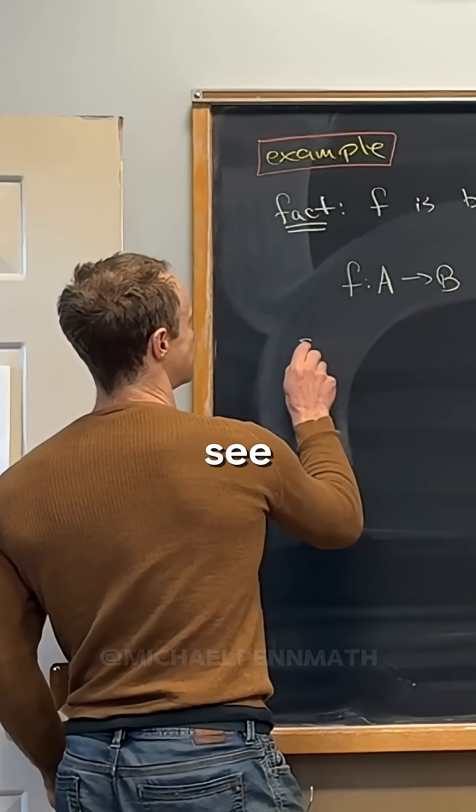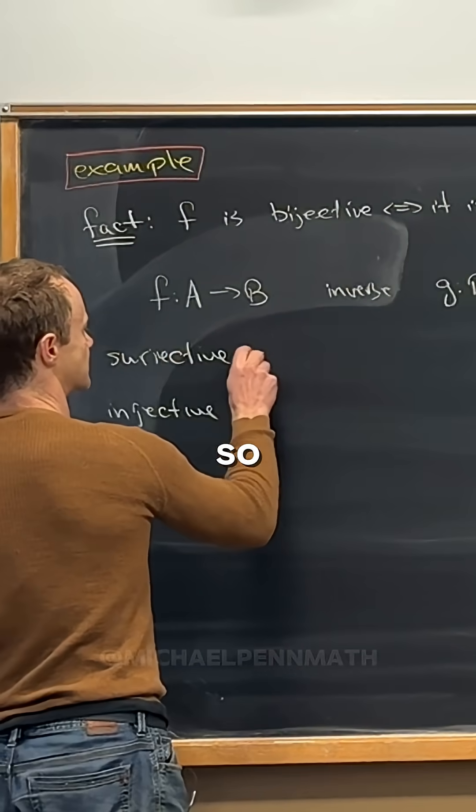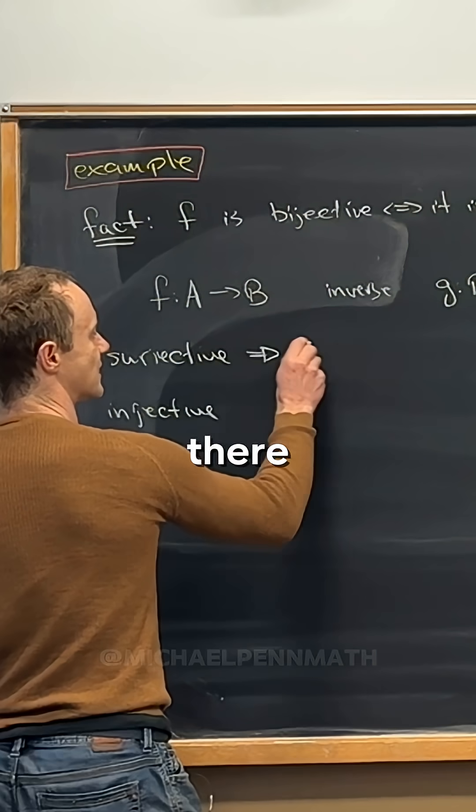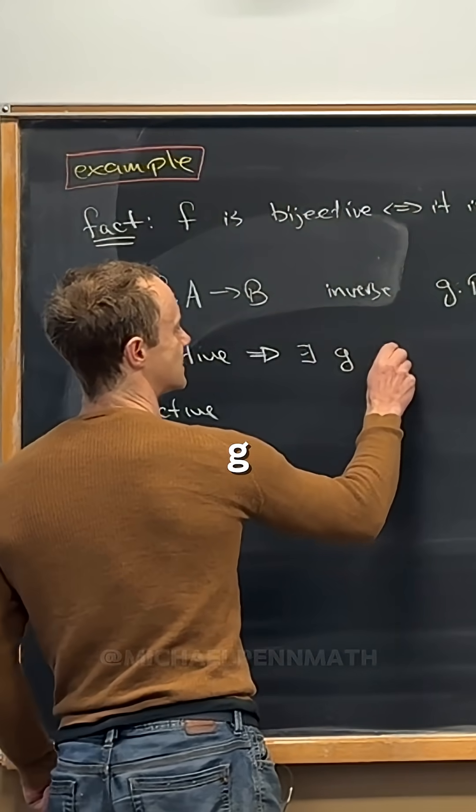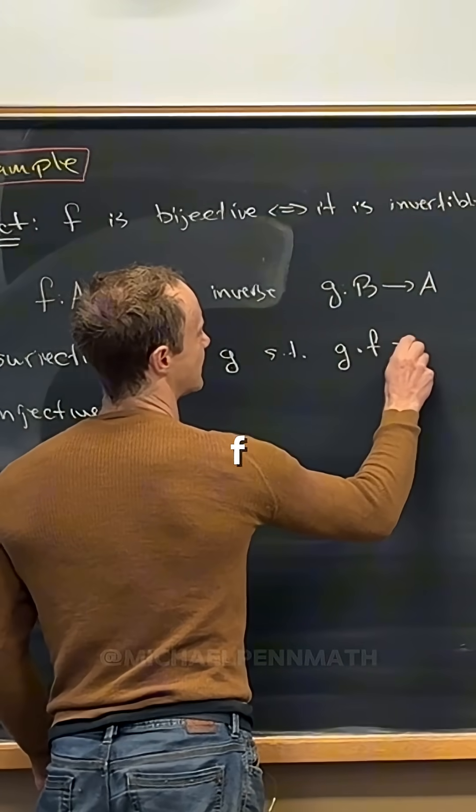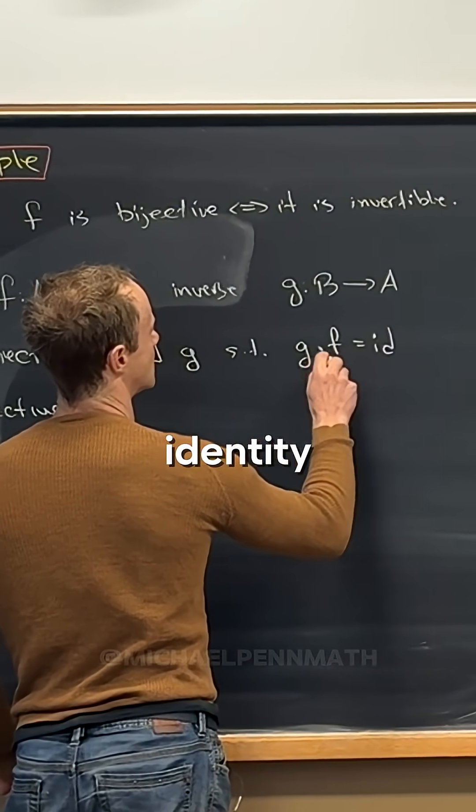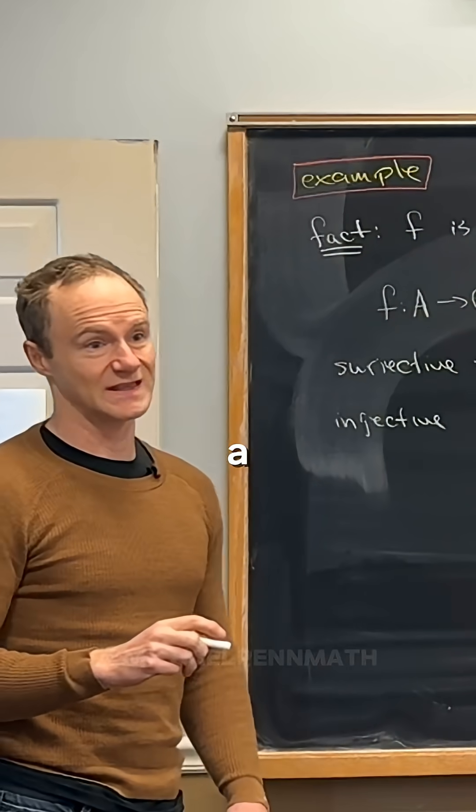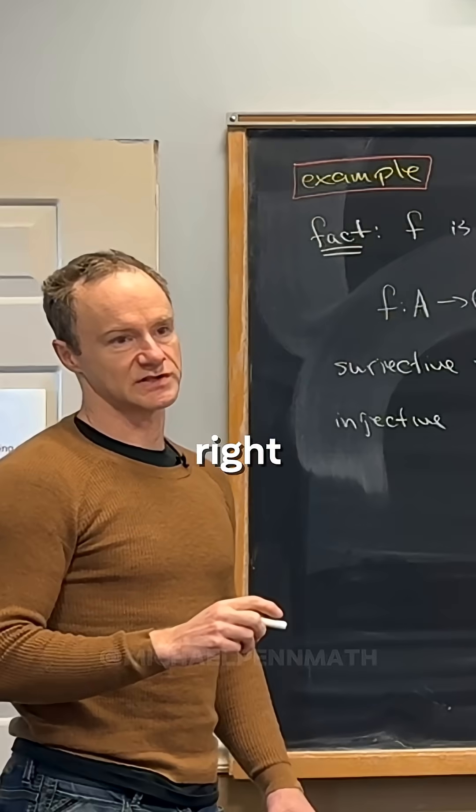So surjective implies there exists a g such that g composed with f is the identity on A. So there's a left inverse if it's surjective.